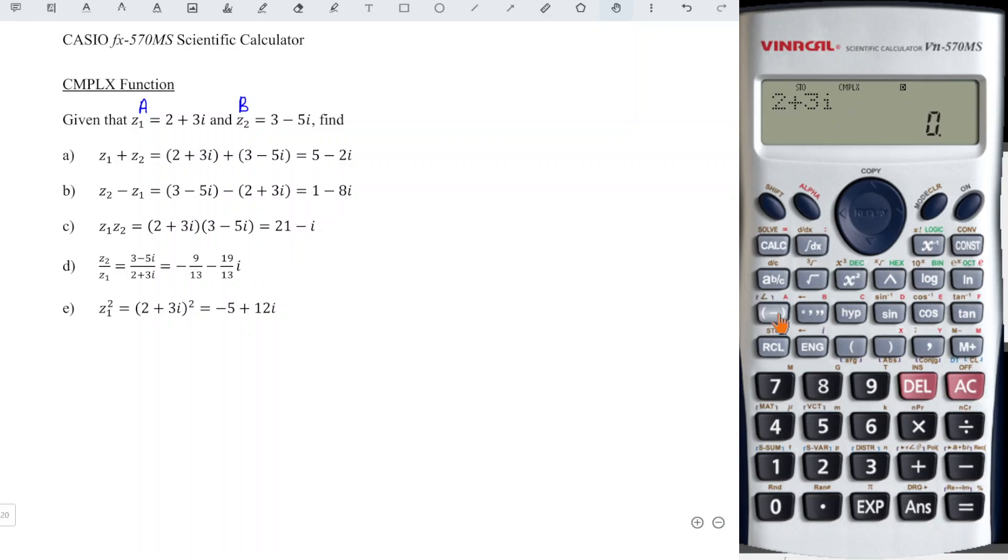We have stored in a. So in order for us to shift in between the real part and the imaginary part, we just have to press Shift equals. So as we can see, this is the imaginary part +3i. Shift equals to get back the real part.